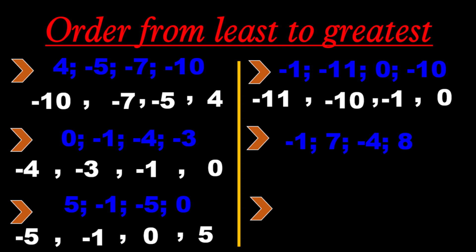Next set: negative 1, 7, negative 4, 8. The smallest is negative 4, followed by negative 1, followed by 7, and the greatest is 8.